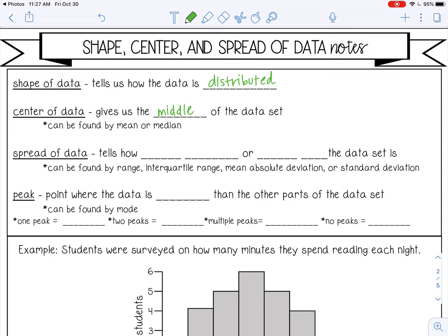The spread of data tells us how close together or spread out the numbers are. And this can be found by range, interquartile range, mean absolute deviation, or standard deviation.